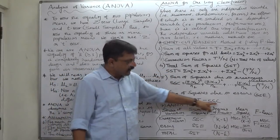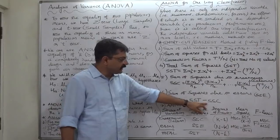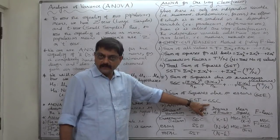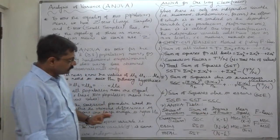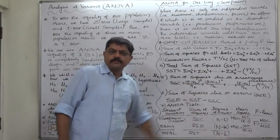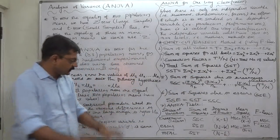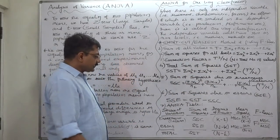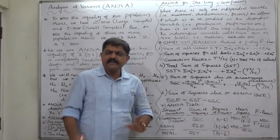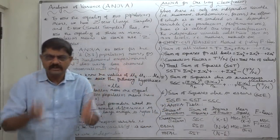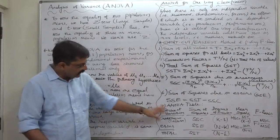SSE is the greatest shortcut: it is the difference between SST and SSC — that is, SST minus SSC. SST is always greater than SSC — that is your first checkpoint. All three values — SST, SSC, and SSE — are always positive; nothing is negative. The seventh step is preparing the ANOVA table, which is itself a shortcut.